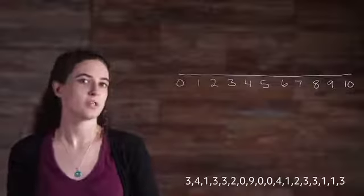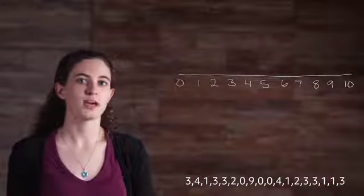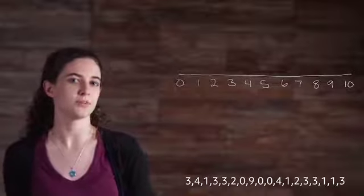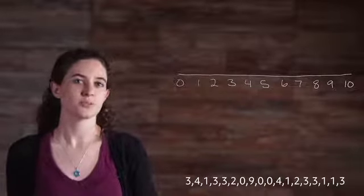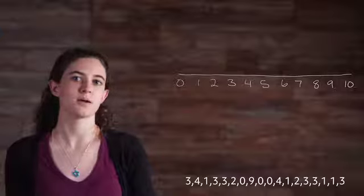Above this number line, we'll put an x for each data point with any repeats being marked above the previous one. Let's work through our string of numbers from left to right, marking our line plot as we go.